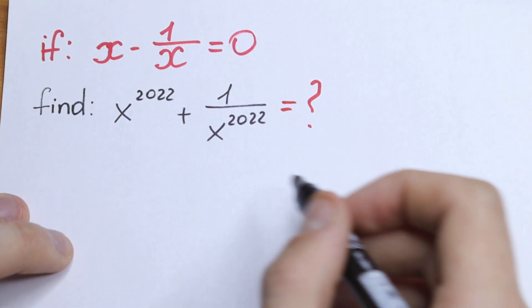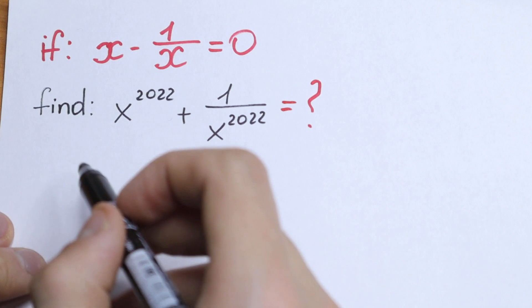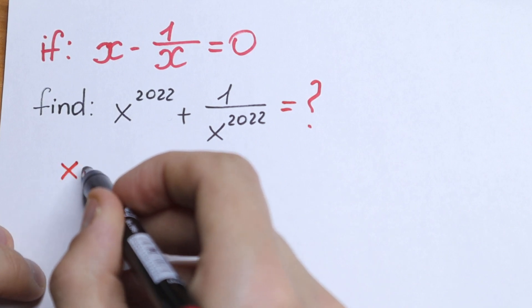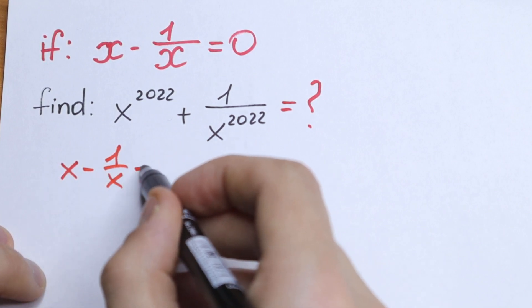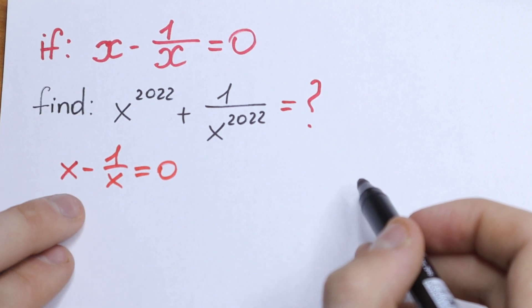Take a look, we have this equation x minus 1 over x equal to 0. So let's write this equation and try to solve it. How can we solve it?